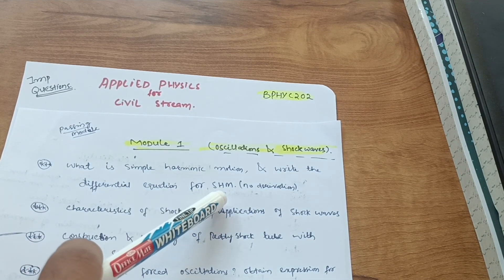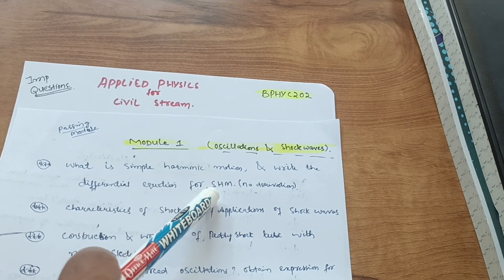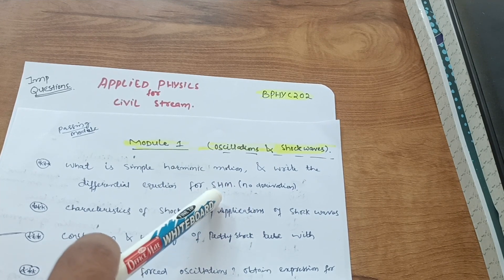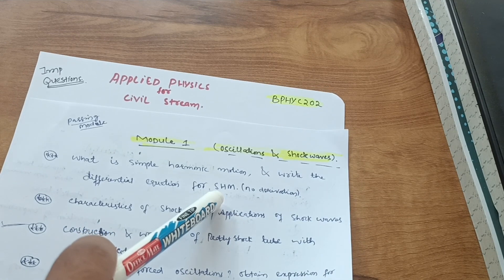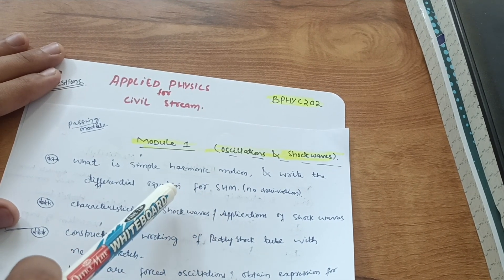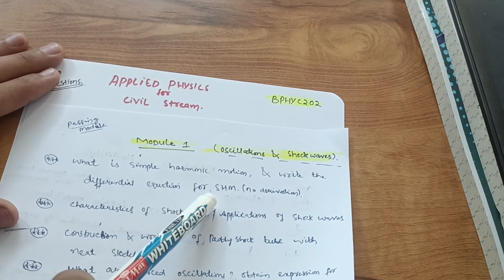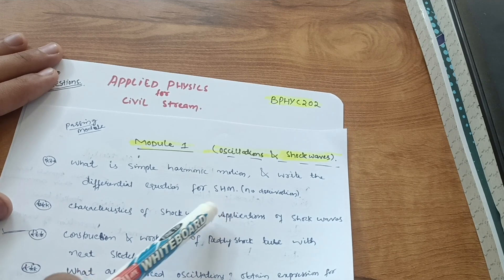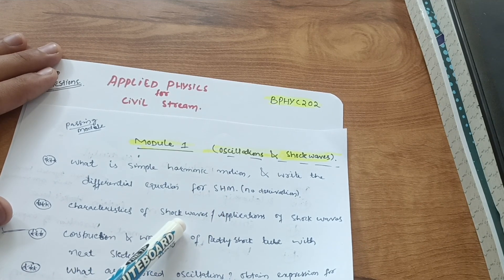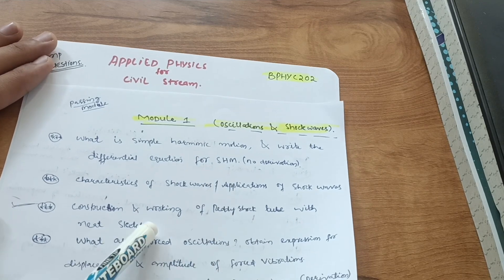First one is what is simple harmonic motion and write the differential equation for SHM, but there is no derivation this time for SHM. In the 2018 scheme derivation was for this concept, but this time they may simply give you what is simple harmonic motion and write down the expression. Then characteristics of shock waves and applications of shock waves is the most important question.